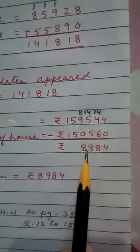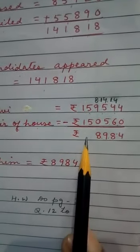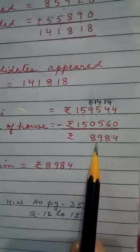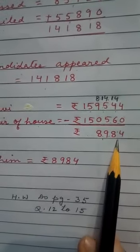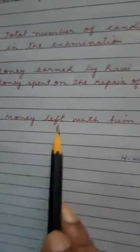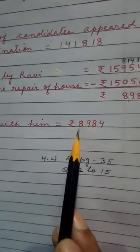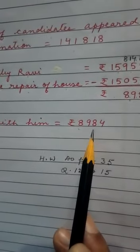5 minus 5, 0. 1 minus 1, 0. So answer is 8,984. So therefore money left with him is equal to rupees 8,984.